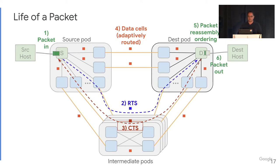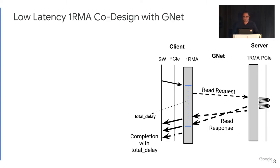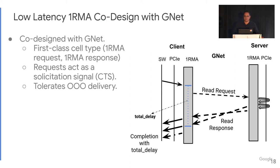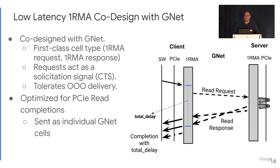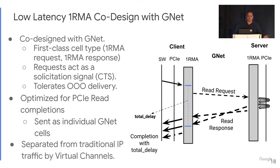For low latency, the second protocol engine is 1RMA. 1RMA provides read, write, and atomic primitives to the Aquila clique. It's co-designed with GNET, so 1RMA read requests and responses are first-class GNET cells — not layered on top of GNET. Read requests act like CTSs, functioning as admission control signals when received. It also tolerates out-of-order delivery, so responses land in memory directly without any reordering. It's co-designed with PCIe, so PCIe responses are sent directly on GNET. Moreover, 1RMA traffic can be separated from IP traffic using virtual channels.